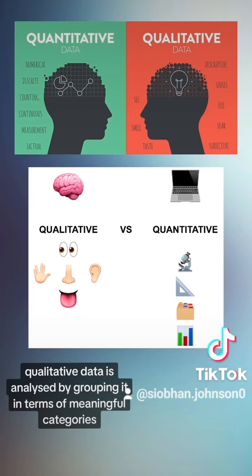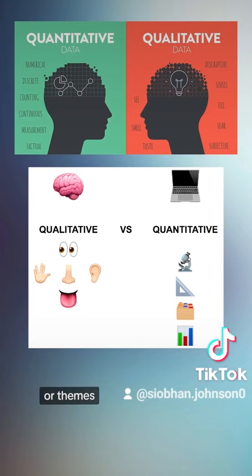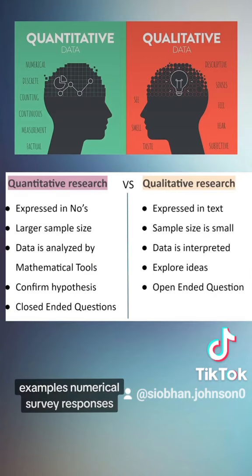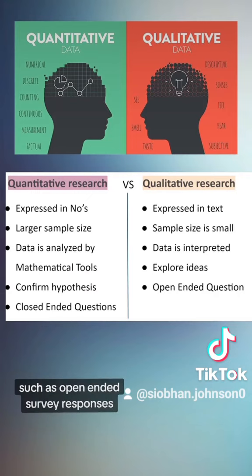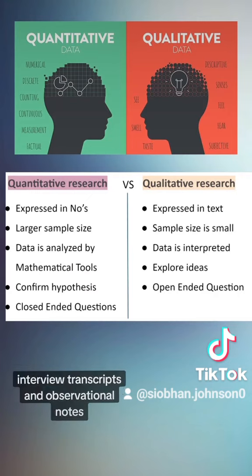Examples of quantitative data include numerical survey responses, test scores, and website traffic data. Qualitative data is collected by interviewing and observing, producing outputs such as open-ended survey responses, interview transcripts, and observational notes.